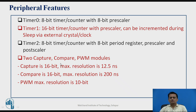Along with the timers, there is a CCP module — Capture, Compare, and PWM. The capture module is 16-bit and the compare module is also 16-bit. In capture mode, the timer register value is stored in the CCP register triggered by a pin. In compare mode, the timer value is compared with the CCP register, and a match generates a signal on the pin or an interrupt. The PWM module can be used for motor speed control with variable duty cycle.